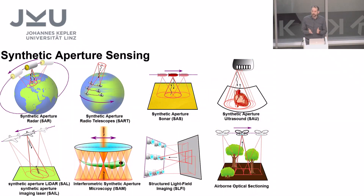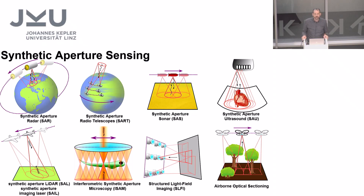Airborne optical sectioning is a new imaging technique that allows removing occlusion caused by vegetation, such as forest, in real time from aerial images. It's based on a signal processing principle called synthetic aperture sensing, used in many fields. Basically, when the signal quality of sensors depends on the size of sensors and you have limitations on how large sensors can be built. A classical example would be a radio telescope, where the dishes have limited size, and you can network multiple radio telescopes and combine their signals computationally to mimic a better signal — basically mimicking the signal that you would get from a really large radio telescope.